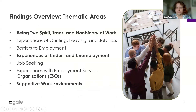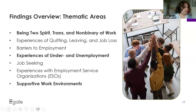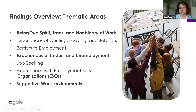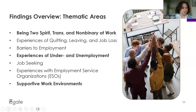Now we're moving into an overview of the findings. Using thematic analysis, our research team identified eight major themes: being two-spirit, trans, and non-binary at work; experiencing quitting, leaving, or job loss; barriers to employment; experiences of under- and unemployment; job seeking; experiences with employment service organizations; and supportive work environments. Due to time limits, today we'll focus on the bolded thematic areas, and also present recommendations identified during analysis as well as those offered directly by our participants.